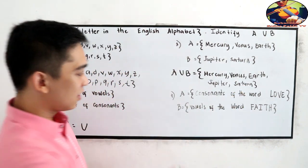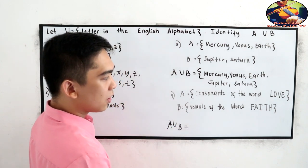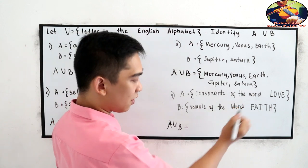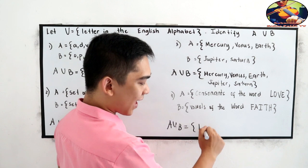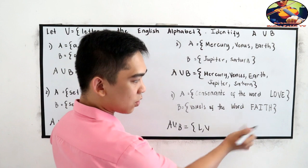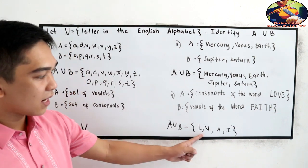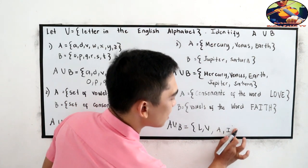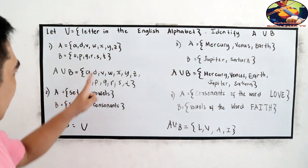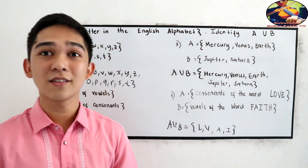And last, A union B, is equal to consonants of the word love. So, our consonants are L and V. Vowels of the word faith. So, we have two vowels, A and I. So, our elements are L, V, A, I. So, this should be a bracket sign. Make sure that it looks like a bracket sign. So, that is our union set.